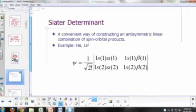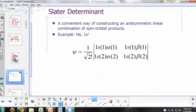There's a more convenient way of constructing anti-symmetric linear combinations, and this is very useful if you have more than two electrons. You can write what's called a Slater determinant.